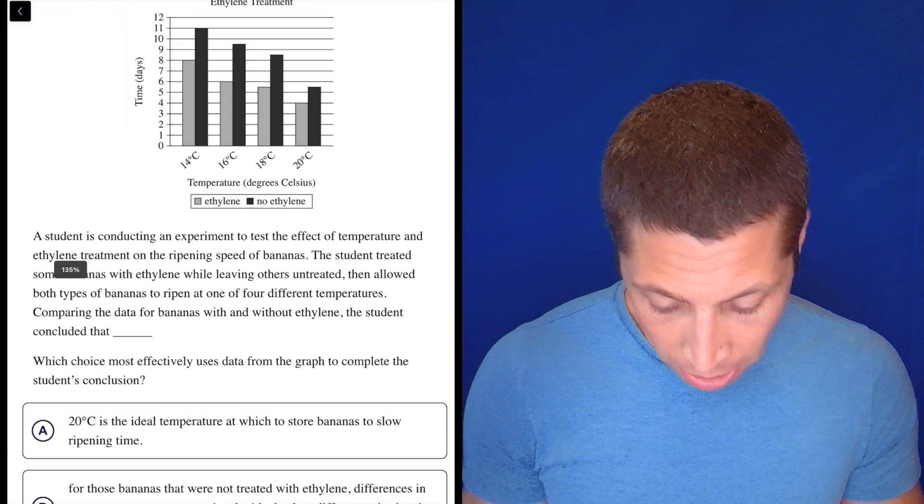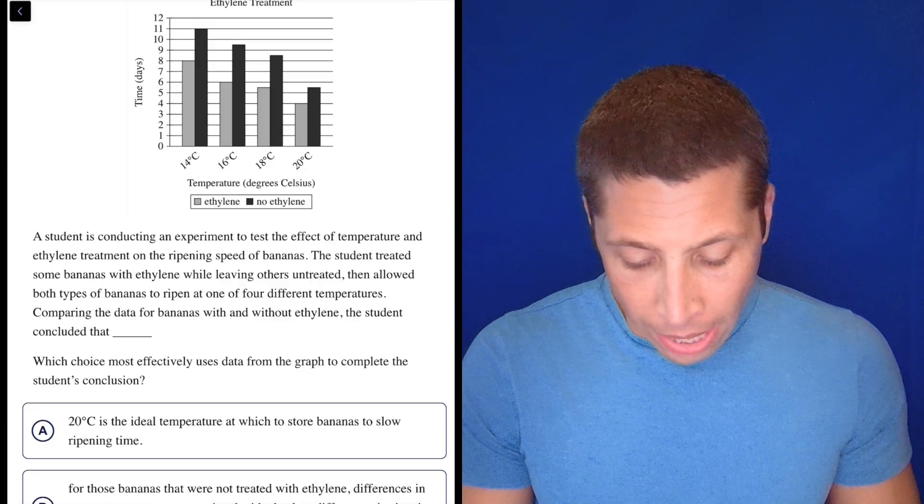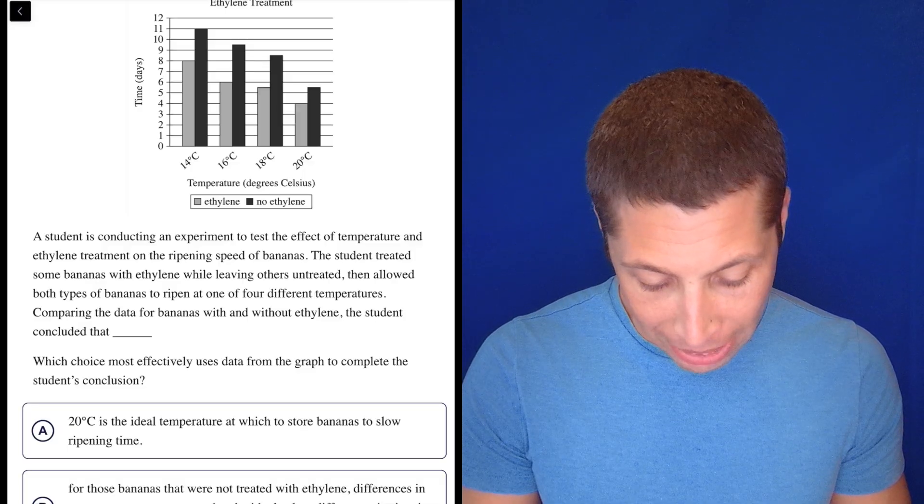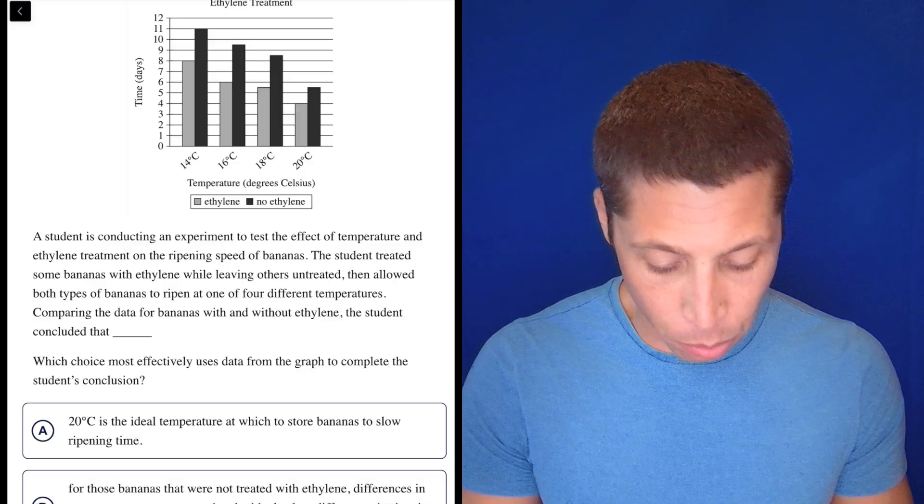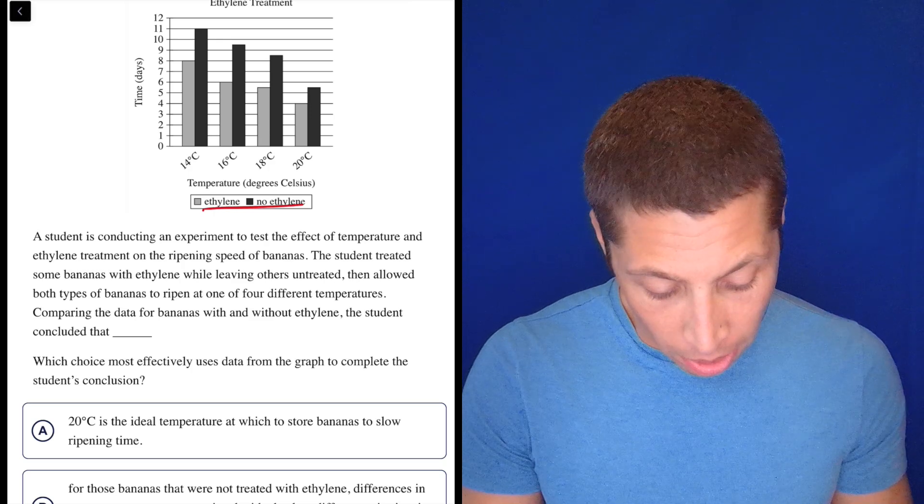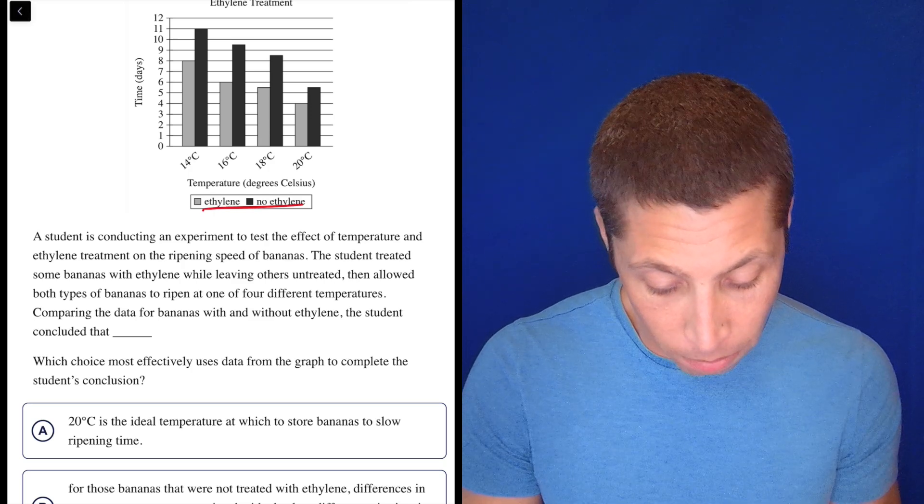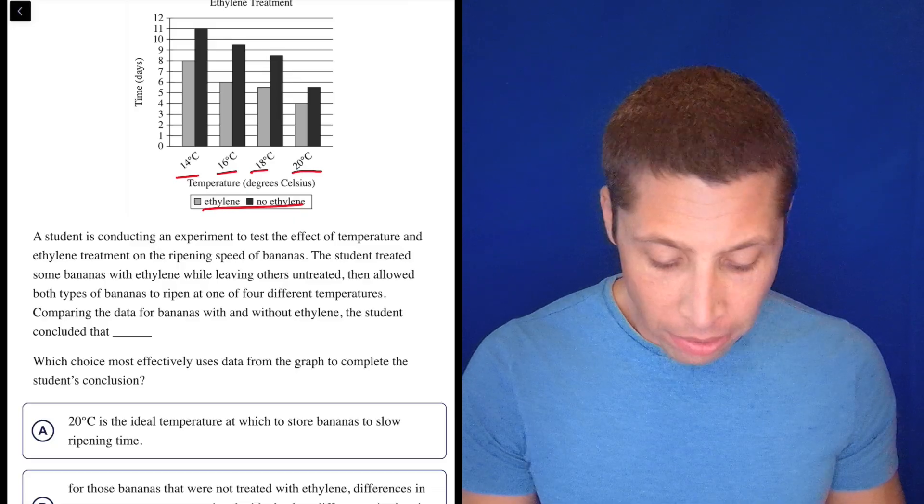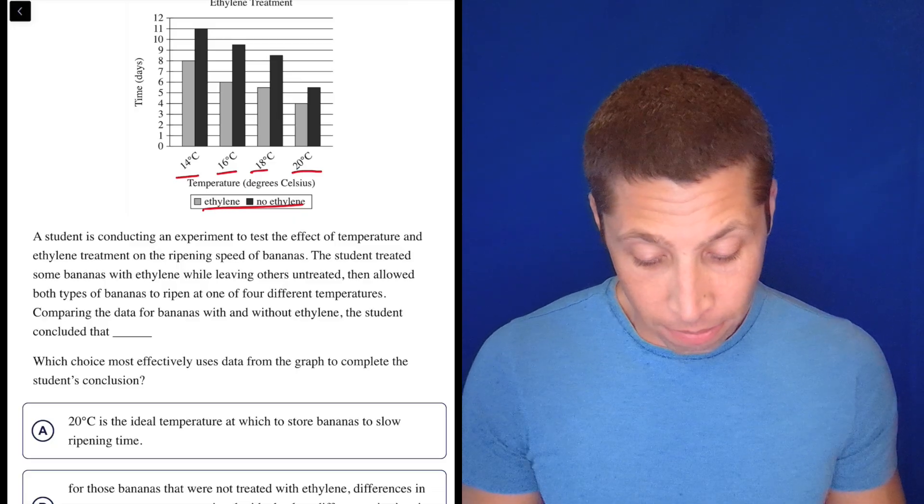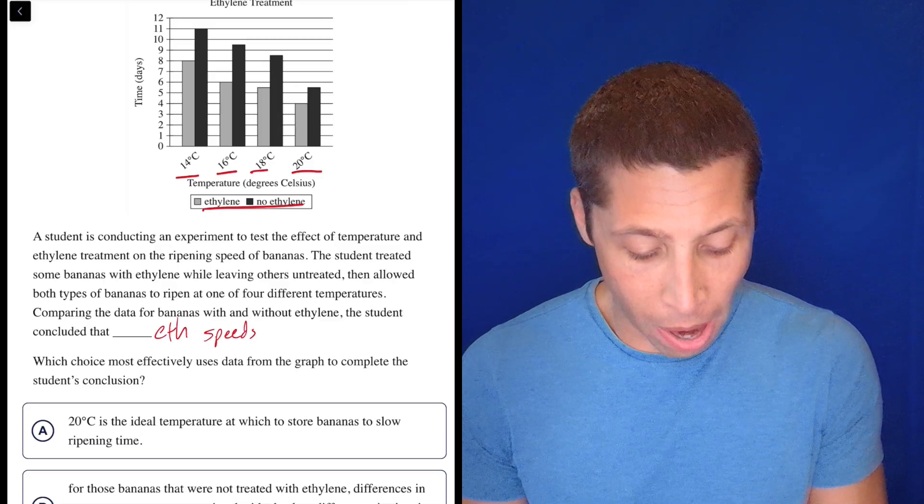So let's look at the passage first. We want to complete the student's conclusion, so we're just filling that blank. A student is conducting an experiment to test the effect of temperature and ethylene treatment on the ripening speed of bananas. The student treated some bananas with ethylene while leaving others untreated, then allowed both types of bananas to ripen at one of four different temperatures. Comparing the data for bananas with and without ethylene, the student concluded that, I don't know,